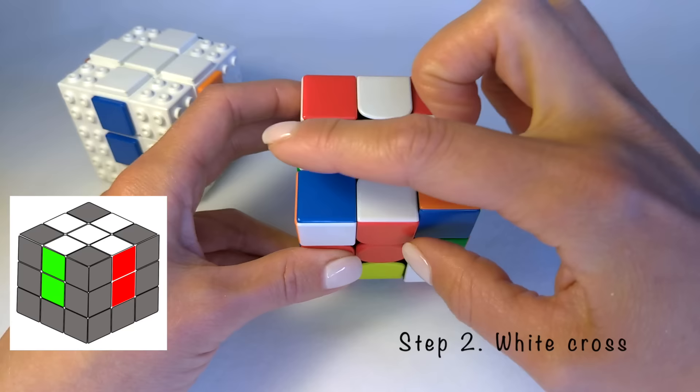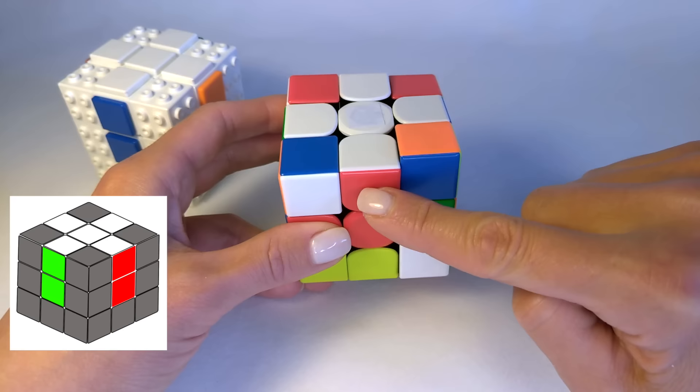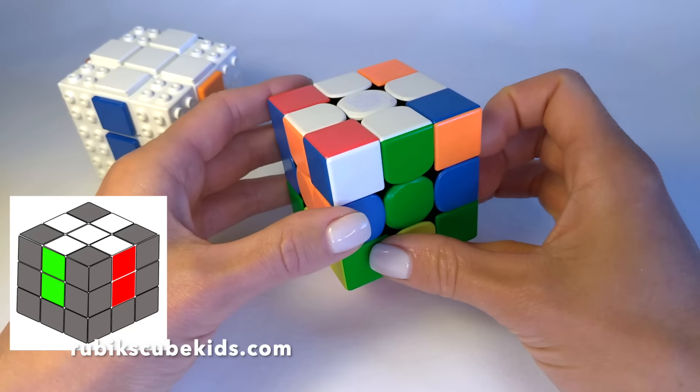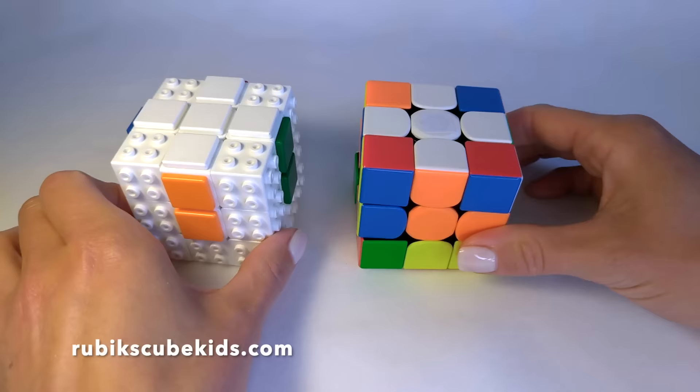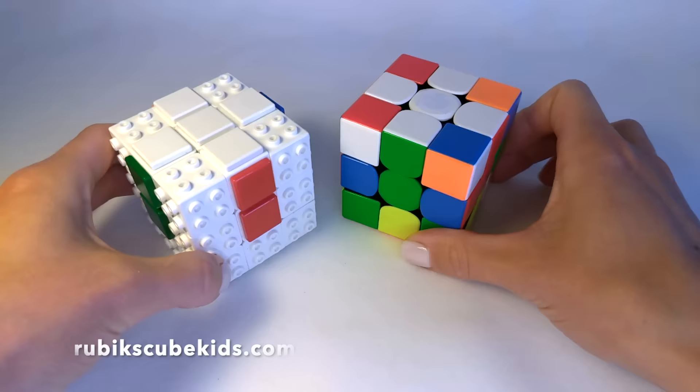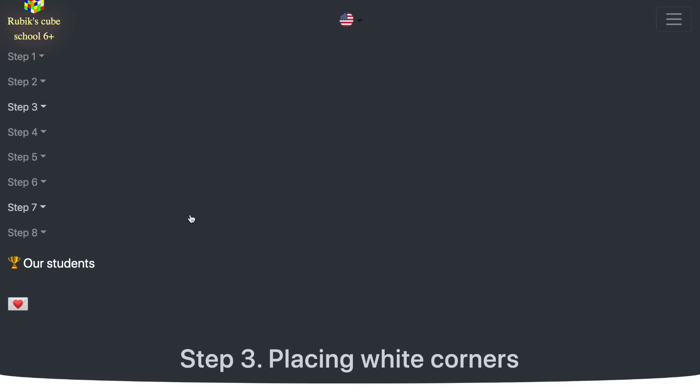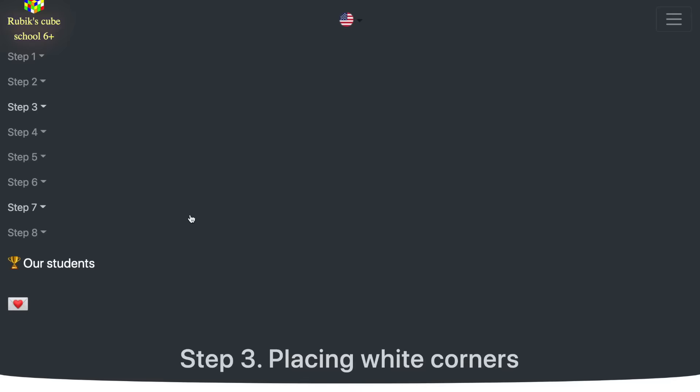Let's check the white cross. If you did everything correctly, you should have a white cross and the second color of the white edges should be near the same color centers. The red edge is ok, the blue edge is near the blue center, the orange edge is near the orange center and green edge is in the correct position too. The second stage is completed. See you in the next lesson. Welcome to my site Rubik's Cube Kids dot com. Step 3. See you there.